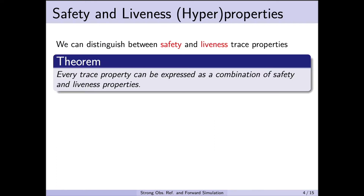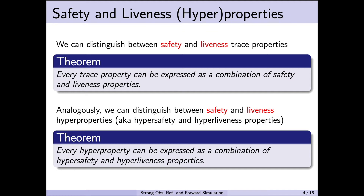One characteristic of trace properties is that they can be distinguished between safety and liveness properties. There is a theorem that says every trace property can be expressed as a combination of safety and liveness properties. Analogously, in the setting of hyperproperties, we can distinguish between safety hyperproperties and liveness hyperproperties. There's an equivalent theorem stating that every hyperproperty can be expressed as a combination of hyper-safety and hyper-liveness properties.